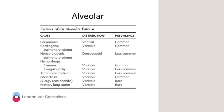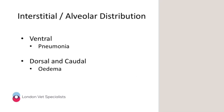An alveolar pattern is more severe than an interstitial pattern, because whatever infiltrate is in the interstitium is also within the alveoli. If I saw a dyspneic patient and I could see an alveolar pattern within the right middle lung lobe along with some patchy areas of interstitial infiltrate, I'm not going to concentrate on the interstitial infiltrate — I'm going to describe the alveolar pattern, because that's most likely causing the dyspnea. An alveolar pattern can be caused by pneumonia, edema (cardiogenic or non-cardiogenic), rodenticide toxicity, hemorrhage, or neoplasia.